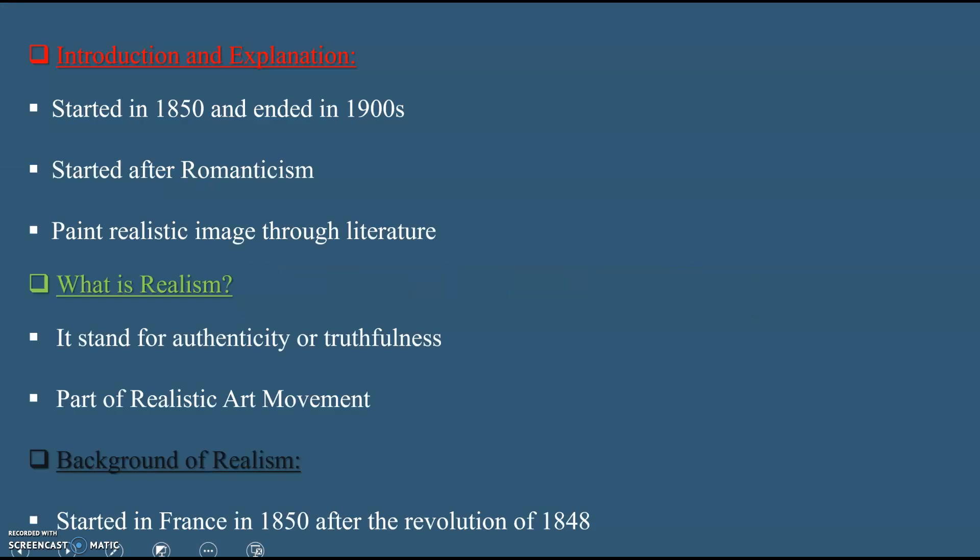Realism and Naturalism started in the 1850s and ended in the 1900s. These were two movements that started after Romanticism — basically a reaction to Romanticism. Both movements attempt to paint a realistic image through literature.